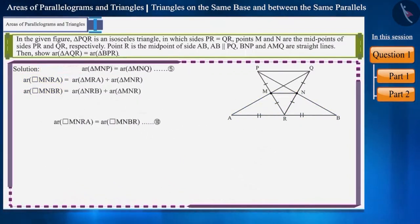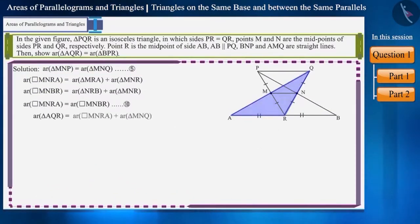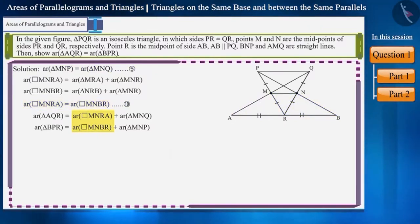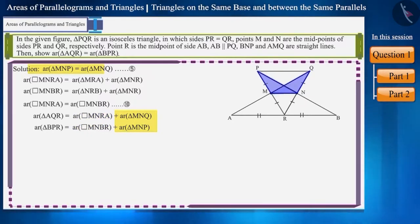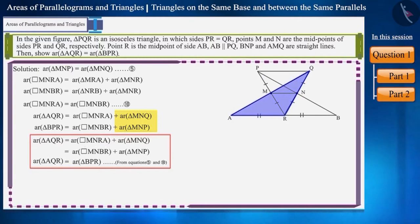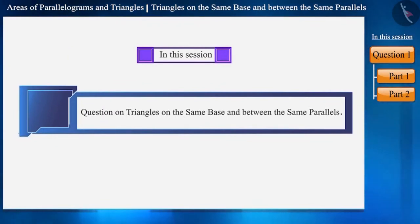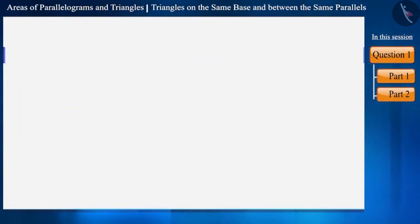Friends, the area of triangle AQR can be written as the sum of quadrilateral MNRA and triangle MNQ, and the area of triangle BPR as the sum of quadrilateral MNBR and triangle MNP. The areas of quadrilaterals MNRA and MNBR are equal, and triangles MNP and MNQ are also equal. Therefore, the area of triangle AQR equals the area of triangle BPR. Thus, we have proved this. That's all in today's session. We solved a question based on triangles on the same base and between the same parallel lines. Let's meet in the next video. Thank you.